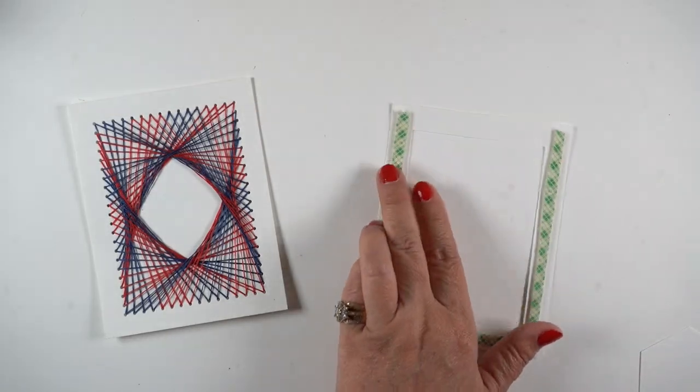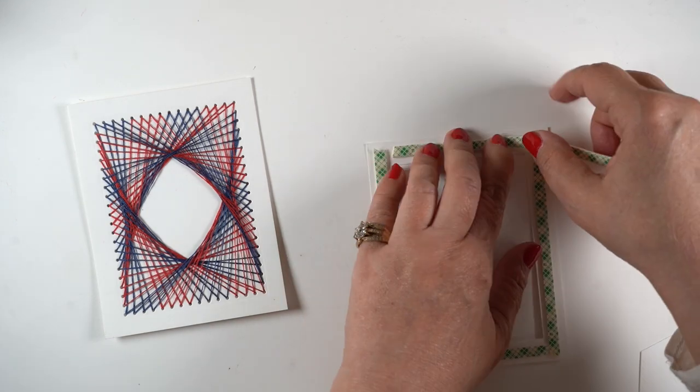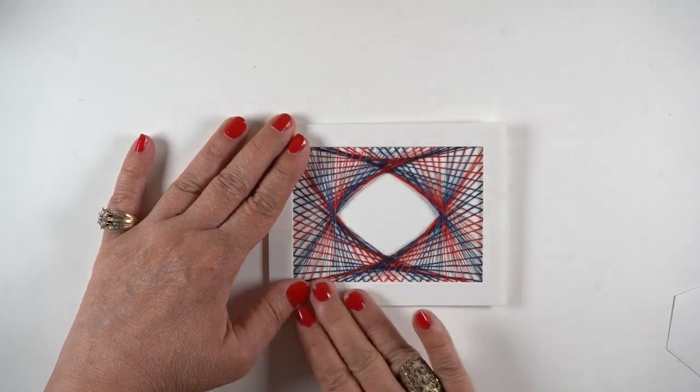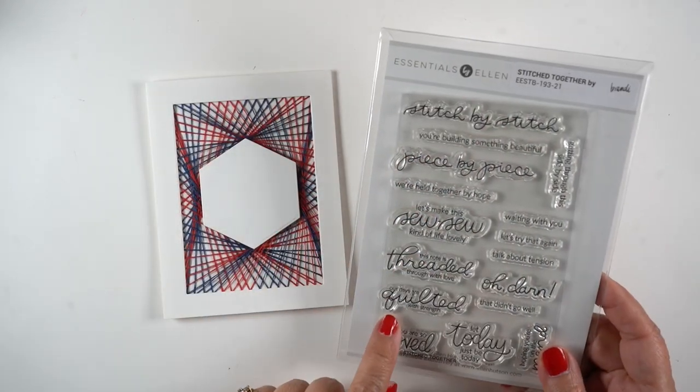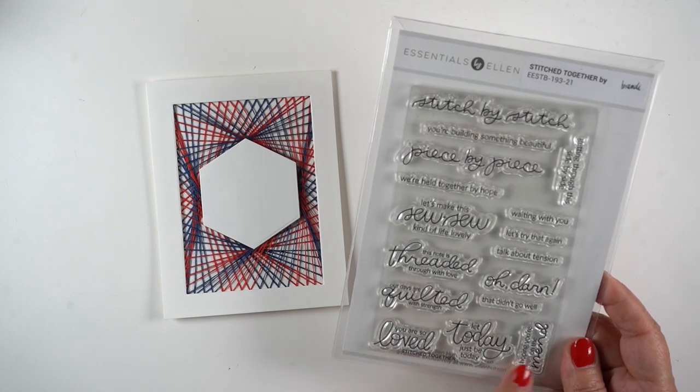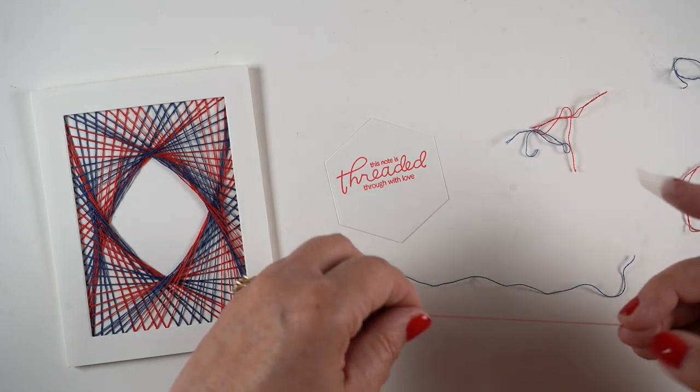And I also pulled out one of the hexagons because this is going to be perfect to cover that center spot. And I put some dimensional adhesive onto the back side of the frame so that I could attach that onto the front and have it popped up a little bit and it'll cover those holes. And then the new sentiment set that has all of these beautiful sentiments about stitching, I thought would be perfect for this.